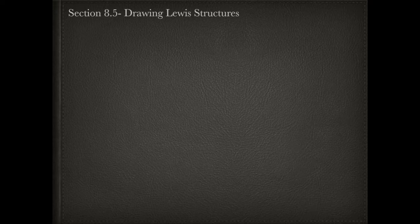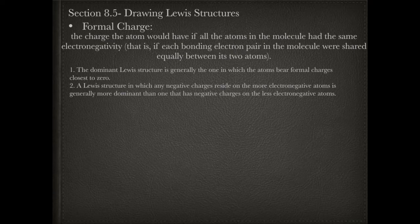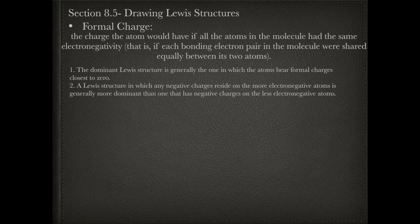The last concept addresses the confusion that can result when you're not sure how to draw your Lewis structure, and the concept that helps is formal charge. The official definition of formal charge is the charge an atom would have if all atoms in the molecule had the same electronegativity — meaning they're sharing electrons equally. The dominant Lewis structure — the one that exists in the greatest amount — is the one whose atoms have formal charges closest to zero.